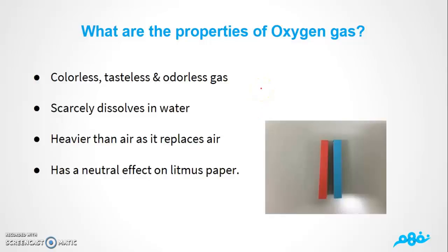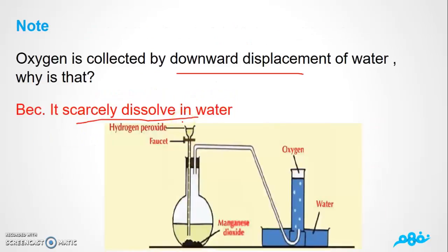Now we're going to talk about the properties of oxygen gas. Number one: oxygen gas is colorless, tasteless, and odorless — no color, no taste, no smell. Number two: it scarcely dissolves in water. As we said, oxygen gas will not dissolve in water, and that's why oxygen is collected by downward displacement of water.